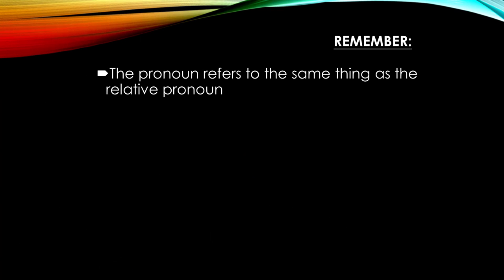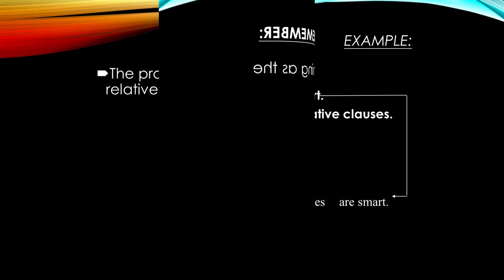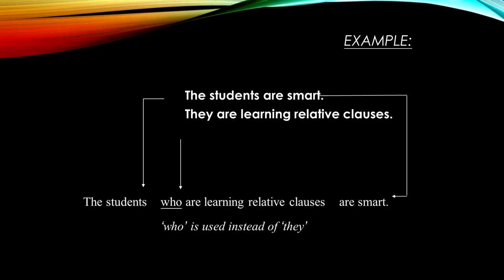Remember, the pronoun refers to the same thing as the relative pronoun. Example: 'The students are smart. They are learning relative clauses.' Combined: 'The students who are learning relative clauses are smart.' 'Who' is used instead of 'they.'